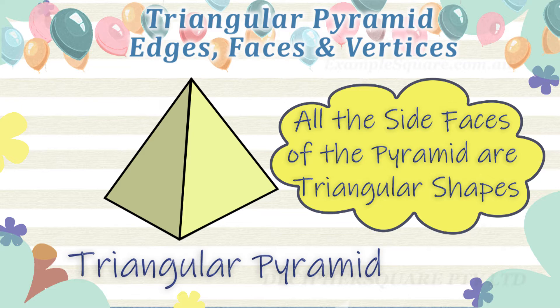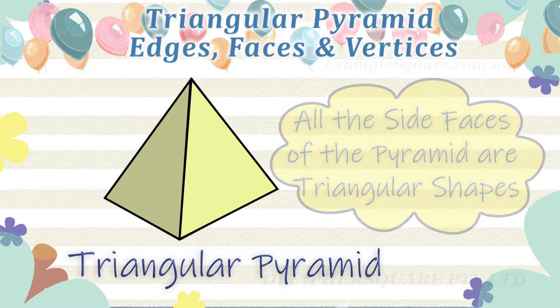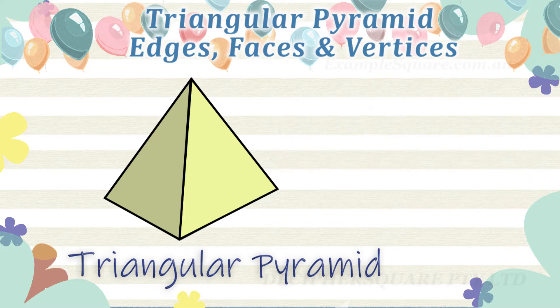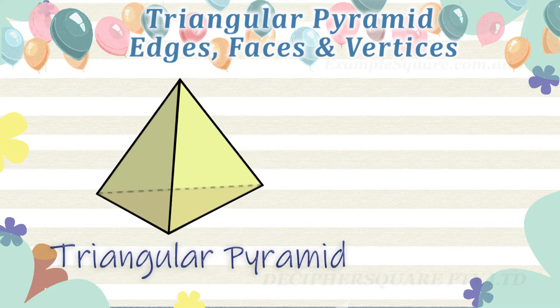There are several types of pyramids. Pyramids have one base and are often described based on the shape of the base. A triangular pyramid is a pyramid with a triangular base.